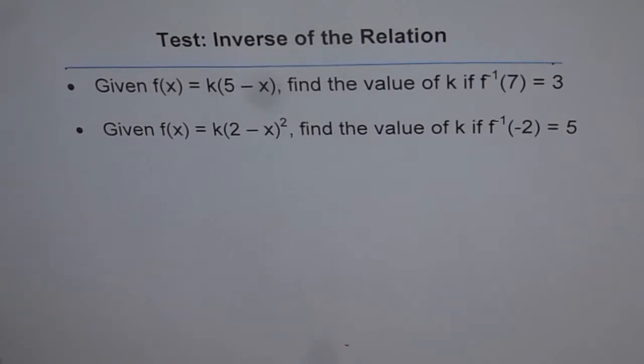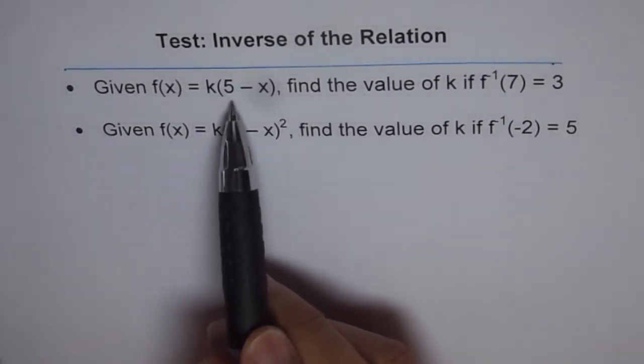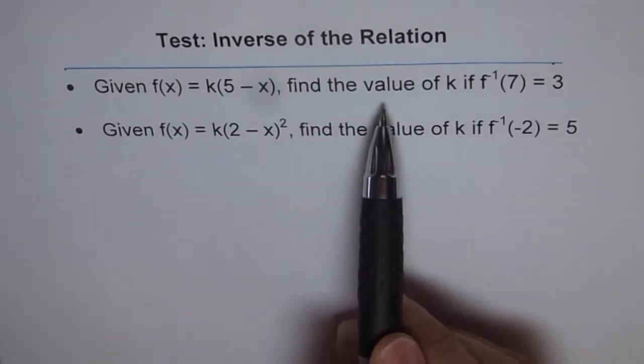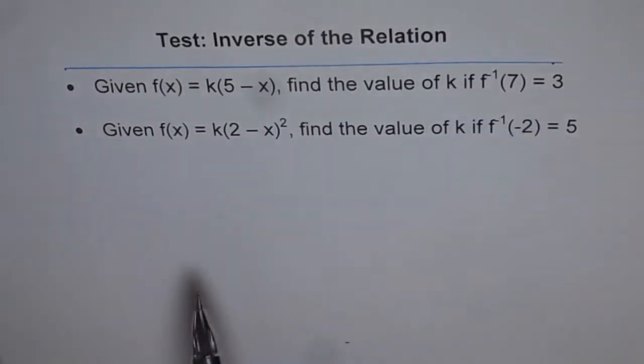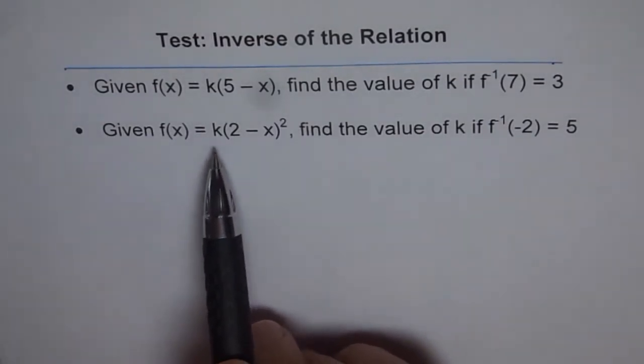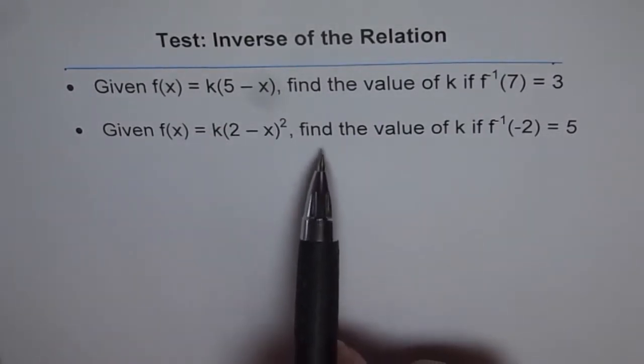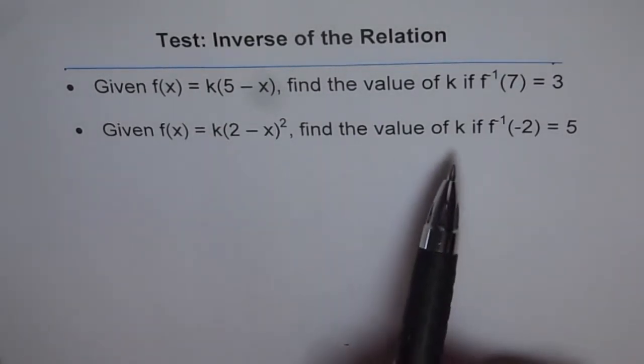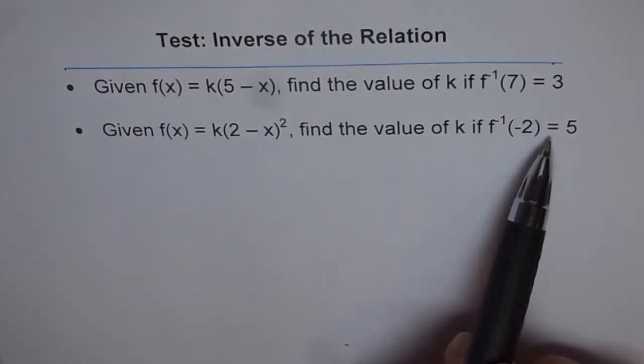The question is: given f(x) equals k times (5-x), find the value of k if f inverse of 7 is 3. And the second one is: given f(x) equals k times (2-x) squared, similar question, find the value of k if f inverse of -2 equals 5.